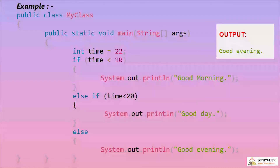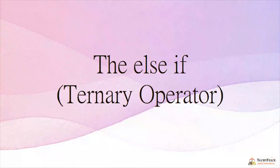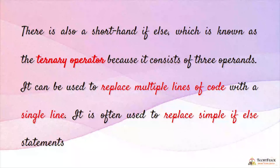In this example, time is 22. First condition: 22 is less than 10 — false. Second condition: 22 is less than 20 — also false. So the else block is executed.